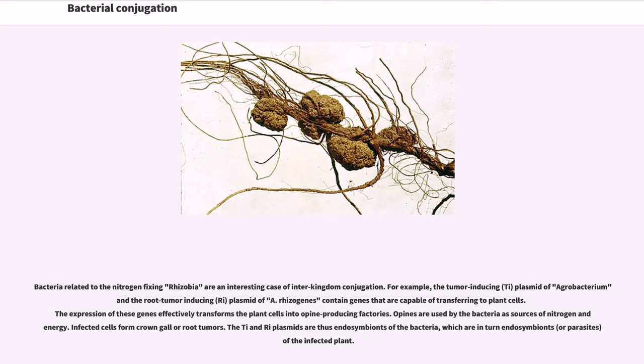Bacteria related to the nitrogen-fixing rhizobia are an interesting case of interkingdom conjugation. For example, the tumor-inducing (Ti) plasmid of Agrobacterium and the root tumor-inducing (Ri) plasmid of A. rhizogenes contain genes that are capable of transferring to plant cells. The expression of these genes effectively transforms the plant cells into opine-producing factories. Opines are used by the bacteria as sources of nitrogen and energy. Infected cells form crown gall or root tumors.